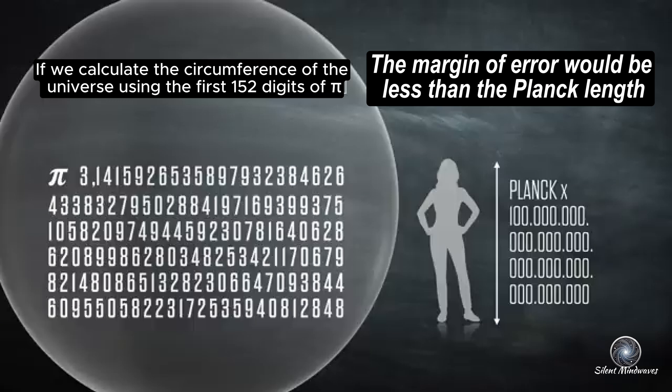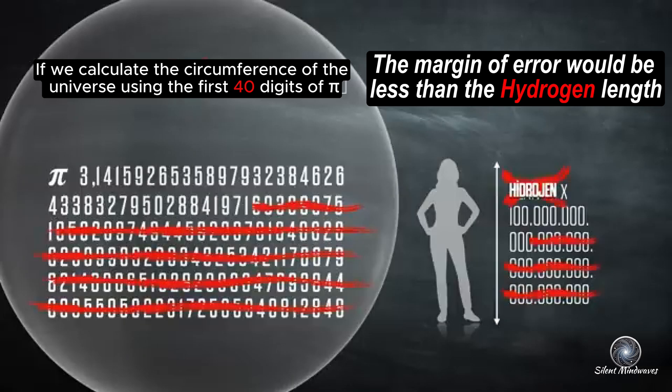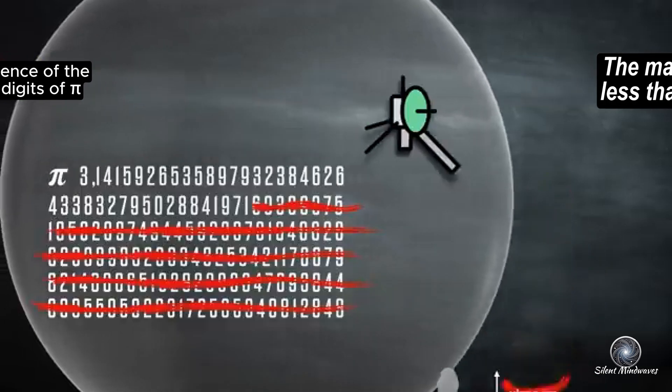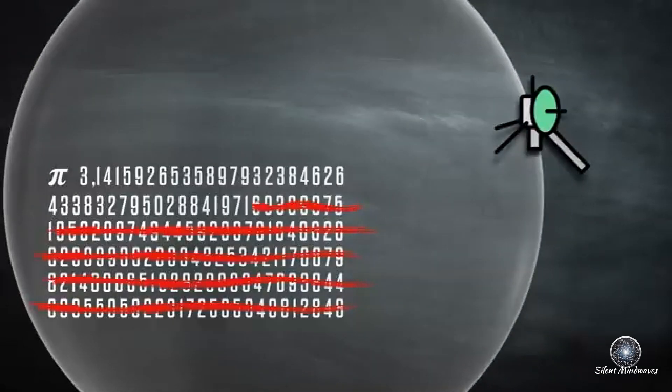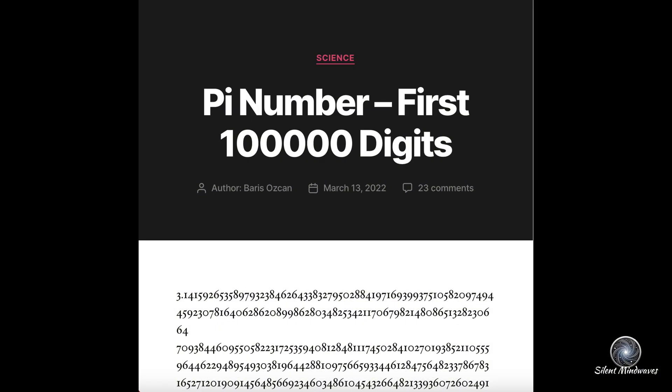This means that knowing 152 digits has no practical use. To put it into perspective, using just the first 40 digits of pi, you could calculate the circumference of the observable universe with an error smaller than the width of a hydrogen atom. Even for the largest sphere you could imagine, based on the distance to the farthest human-made object, the Voyager spacecraft, you'd only need 15 digits of pi to perform accurate calculations. This is why NASA doesn't bother with trillions of digits of pi in its computations. Still, I've included a link in the description to a page with the first 100,000 digits of pi, just in case you ever need them.